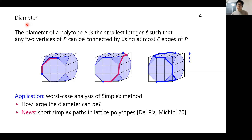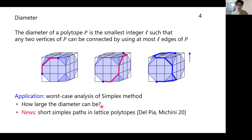One motivation for studying the diameter comes from its close relationship with the worst-case complexity of the simplex method. As you can see from this figure, the diameter serves as a lower bound on the complexity of the simplex method. Suppose you have a linear programming problem where this vertex is the optimal solution; if we run the simplex method with this vertex as the initial vertex, the length of the simplex path cannot be shorter than the diameter. So it is a really important question how large the diameter can be.